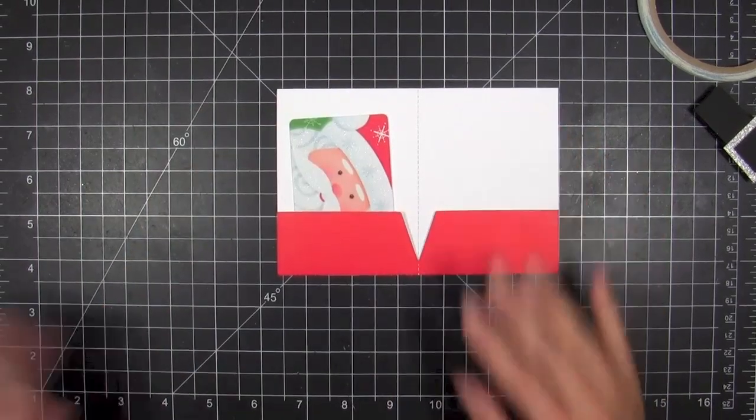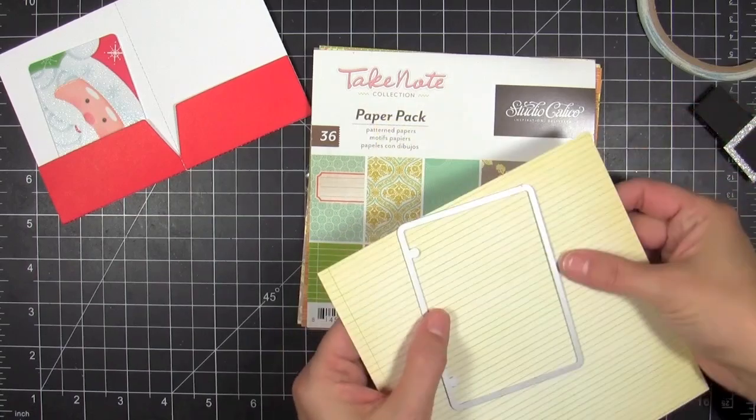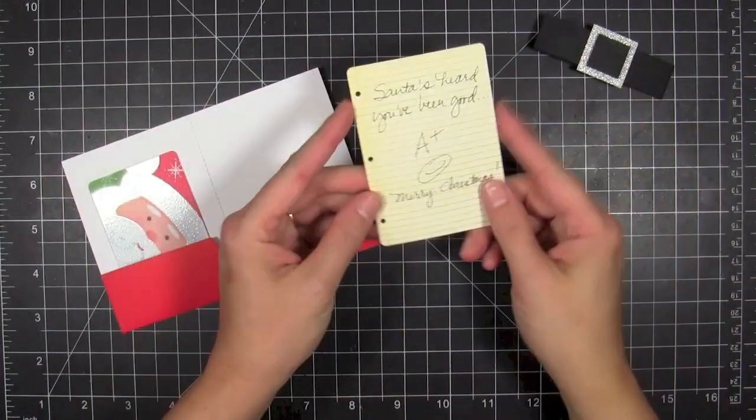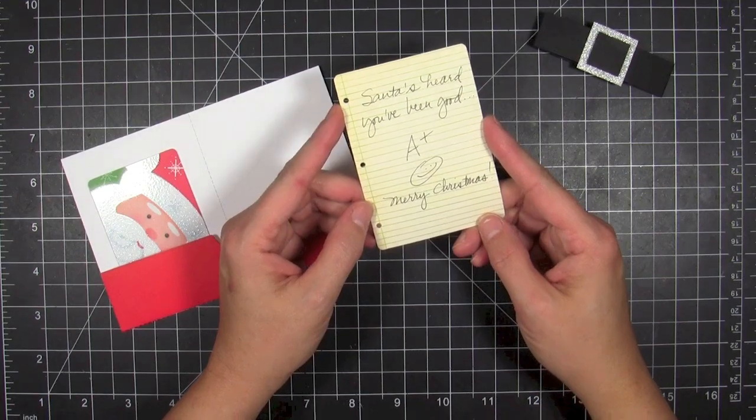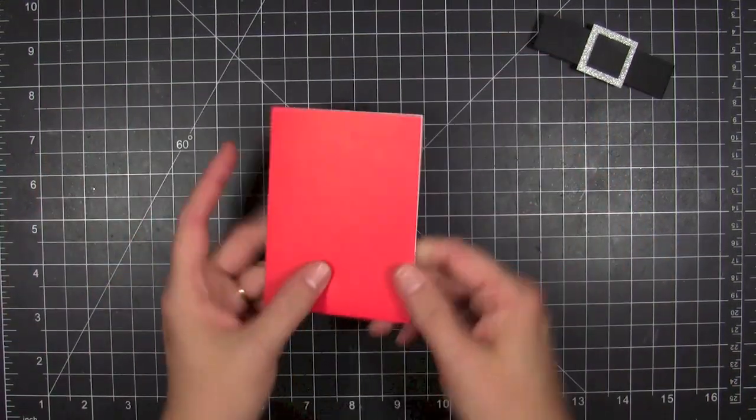And there you can see I slid my belly band off there pretty easily. Then I did want to use that insert die and some ruled paper from the Take Note collection. It had some cool school looking paper in there to make a little note to go inside. I think this would be cute for a teacher gift.